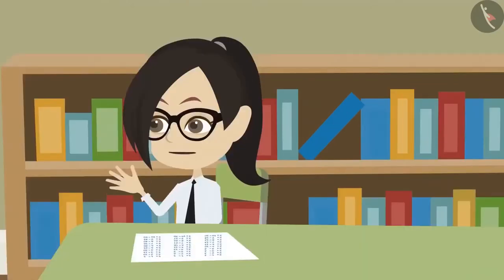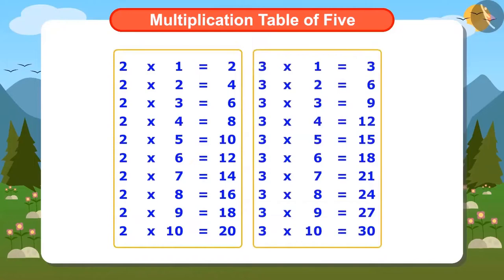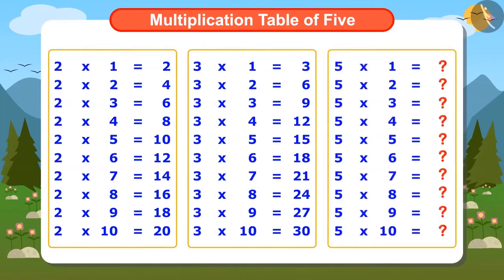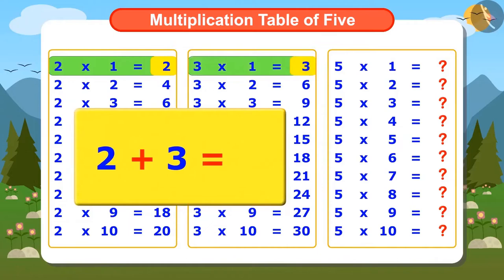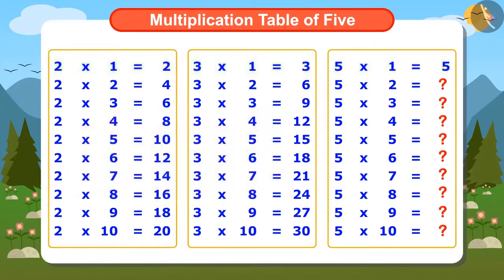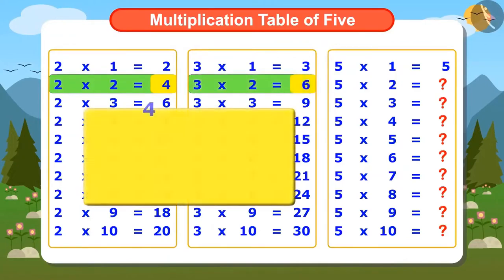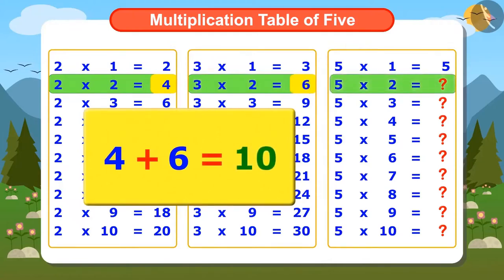Look, this is the multiplication table of 2 and this is the multiplication table of 3. Now I will write the table of 5 using these. 2×1 is 2 and 3×1 is 3. Add 2 and 3, the answer is 5. So we write 5×1 is 5. I don't think we can find the next number similarly. We can find it exactly like this. 2×2 is 4 and 3×2 is 6. If 4 and 6 are added, the answer will be 10. This means 5×2 is 10.